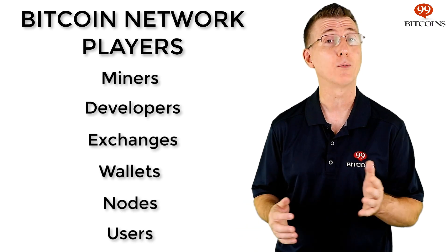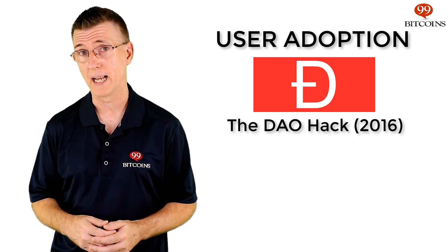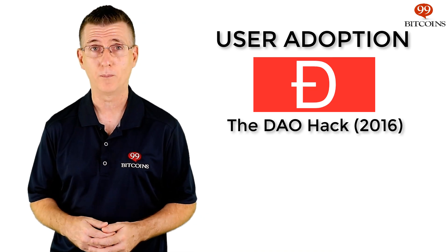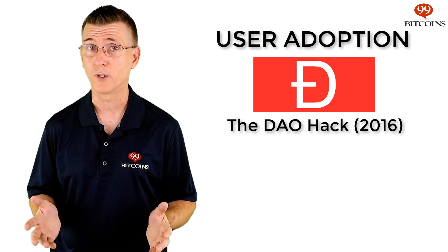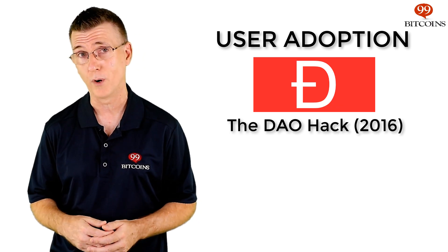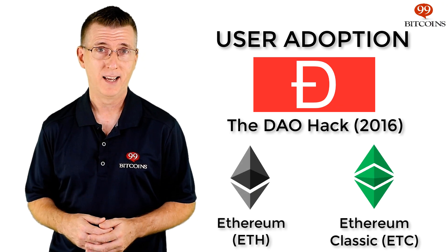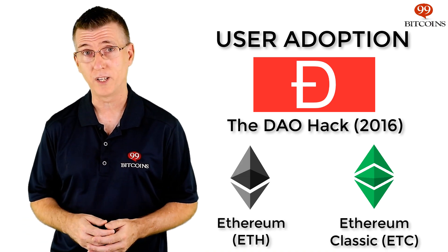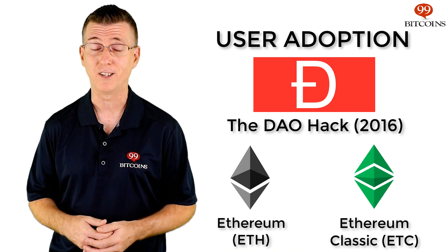A good example of the power of user adoption is the case of Ethereum's hard fork. Back in 2016, after several million dollars were stolen from an Ethereum-based project called the DAO, Ethereum developers suggested rolling back the blockchain and erasing the malicious transaction. This created a heated debate, at the end of which Ethereum forked into two coins — Ethereum and Ethereum Classic. What's known today as Ethereum is actually the altered version, not the original one. The reason it's considered the true Ethereum is because that's the coin most users decided to adopt. Miners, exchanges, wallet providers, and even developers all rely on public acceptance to survive. That's why, in the end, the users have the final say.